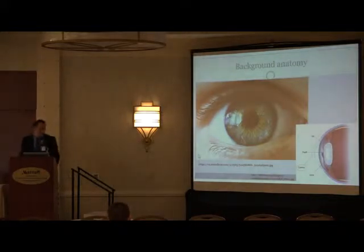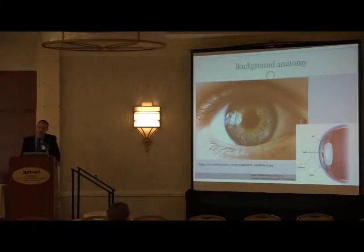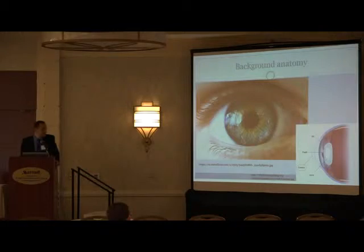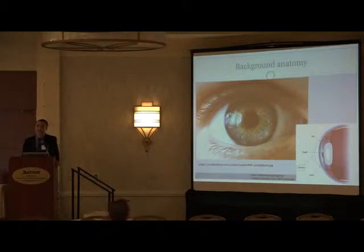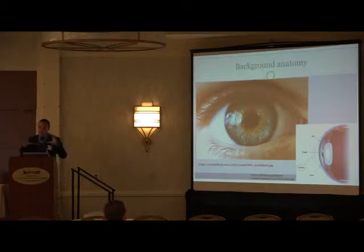Starting from the basics: when you look at the eye, you see the eyelids and eyelashes, but you also see the colored part of the eye. That colored part is the iris — it's actually a muscle, and it's within the eye, not the eye surface itself. The black part of the eye when you're looking at somebody is the pupil; it's actually a hole. The iris constricts and relaxes to adjust the size of the pupil so that more or less light can come in.